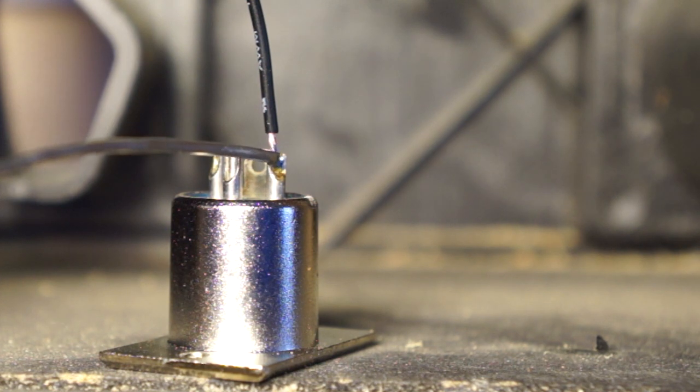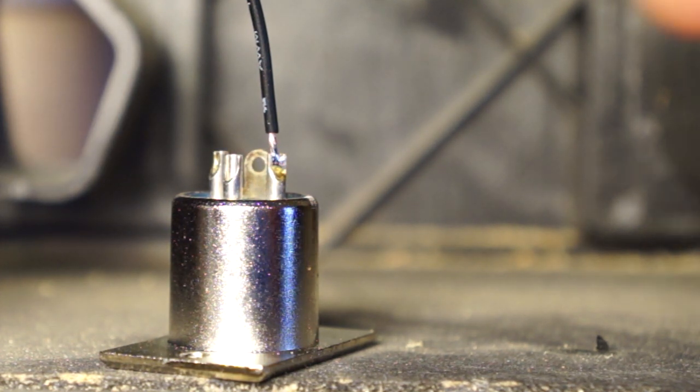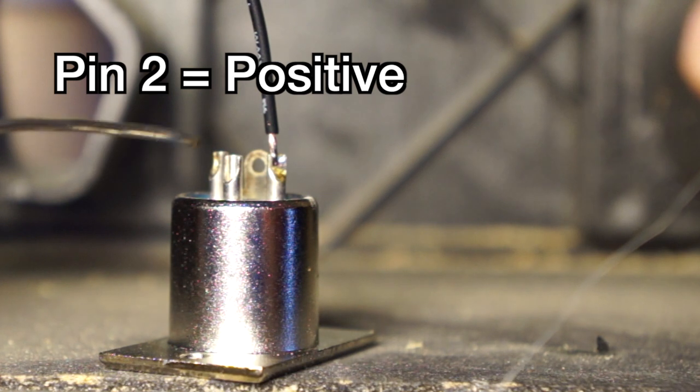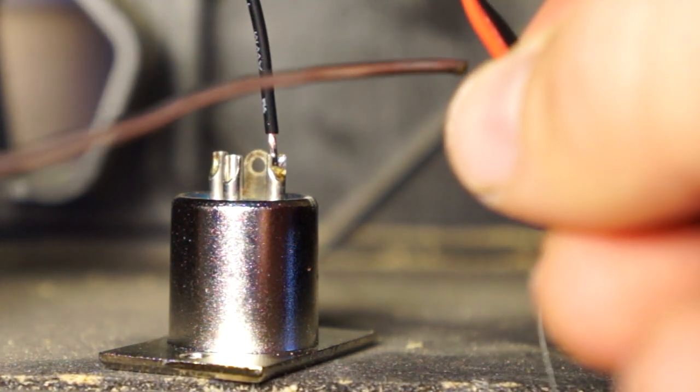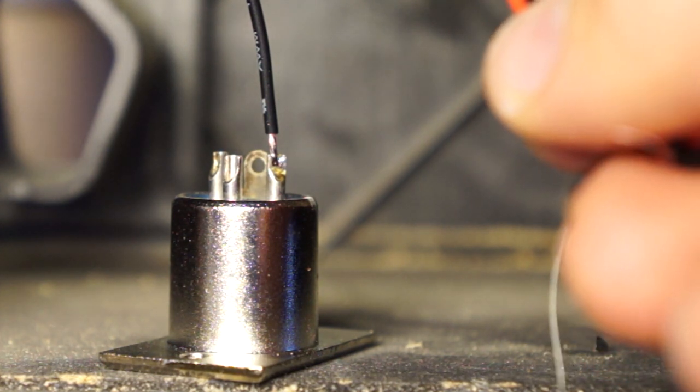Now that we have the ground soldered to pin one, pins two and three are going to be filled with the wire that's running to the speaker itself. Pin two will be positive, and pin three will be negative. I believe on a home stereo, red is positive, black is negative, but I'm not entirely sure.